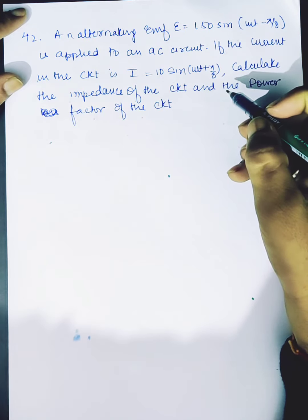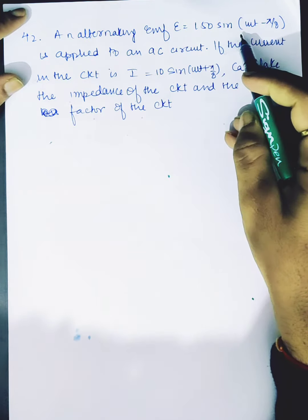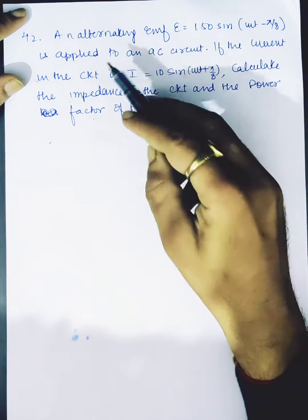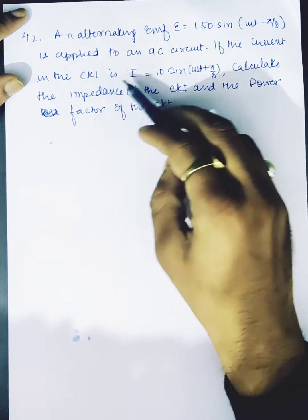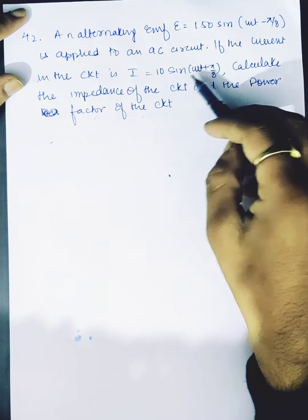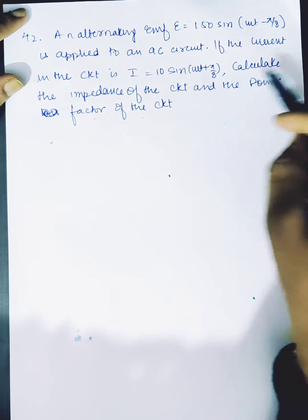An alternating EMF E equals 150 sin(ωt - π/8) is applied to an AC circuit. If the current in the circuit is I equals 10 sin(ωt + π/8), calculate the impedance of the circuit and the power factor of the circuit.